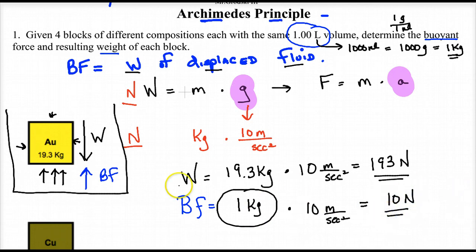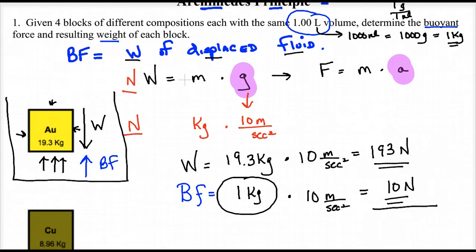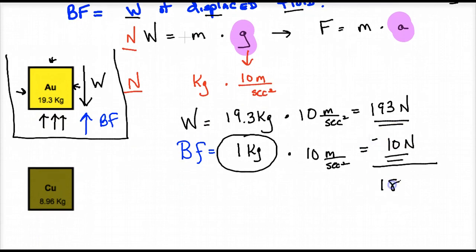And if I was to submerge this gold block in water and put it on a scale, well, it now would weigh 193 minus 10, 183 newtons. It would feel lighter because of the buoyant force upward. So the weight down was 193. The buoyant force upward, not as big, but certainly there, is 10. Again, the resultant force, the resultant vector is going to be 183.